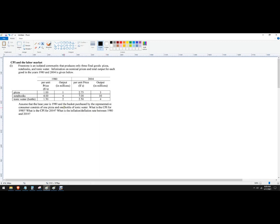So looking at this, it tells us assume the base year is 1980, the basket purchased by the representative consumer is one pizza and one bottle of tonic water. So actually the notebook price is going to be irrelevant here, and we're really just looking at one product here.